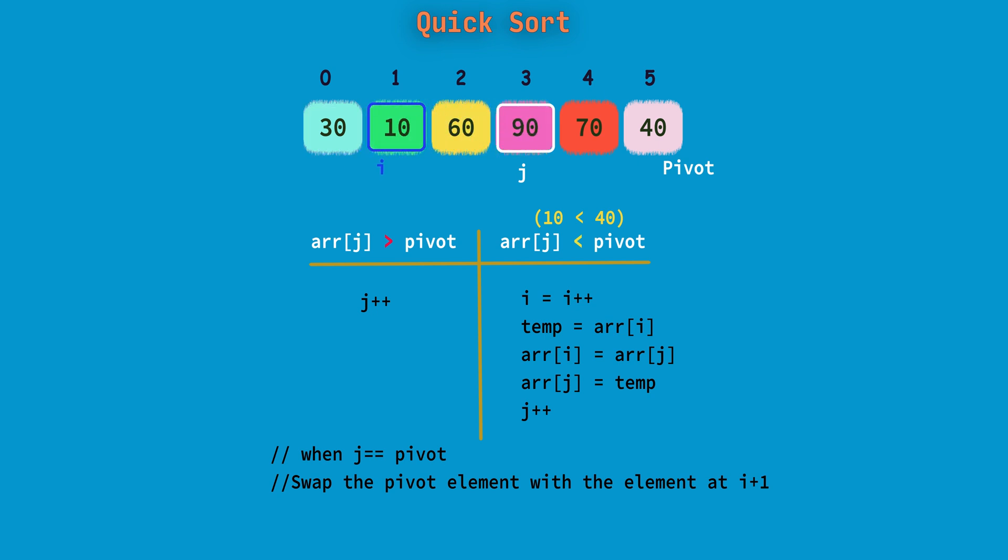And we continue the iteration. Here j is 90. Since 90 is greater than 40, we will move j. Now j points to 70 and 70 is greater than 40, so we will move j. Now j moved to 40 which is equal to the pivot element. Here we need to stop our iteration.